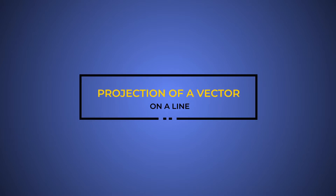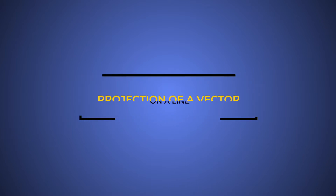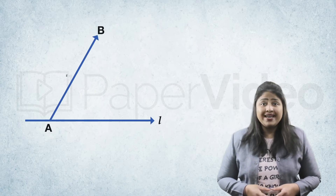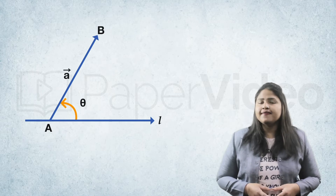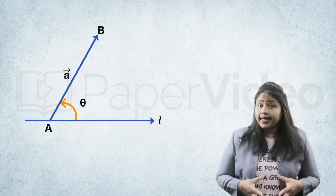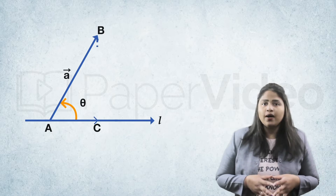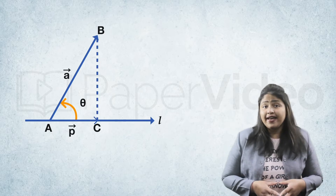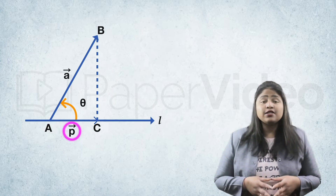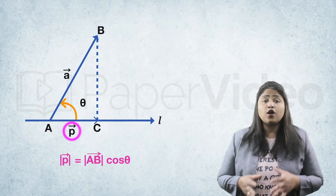Projection of a vector on a line. How do we define the projection of a vector on a line? Suppose we have a directed line L. If a vector AB makes an angle theta with the given directed line L in the anti-clockwise direction, then the projection of AB on L is given as a vector P, whose magnitude is given as the magnitude of vector AB times cos theta.